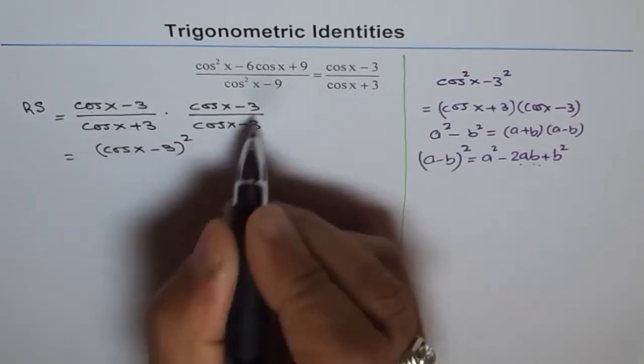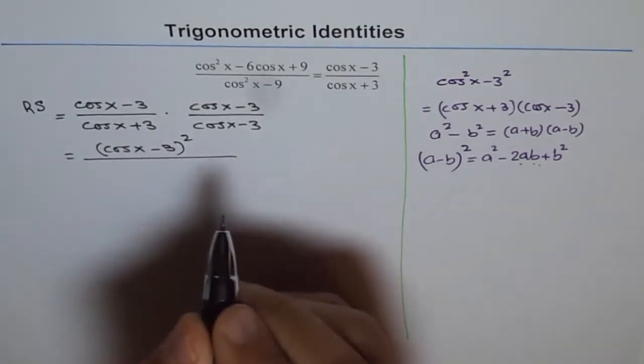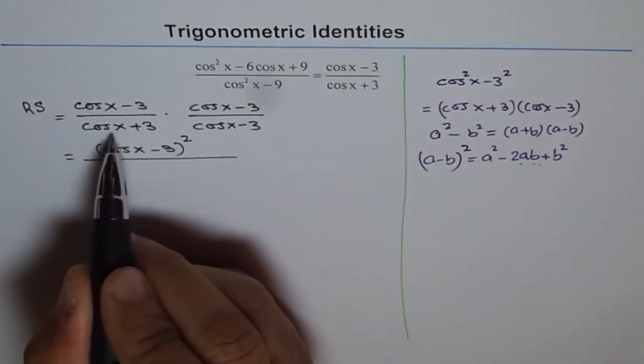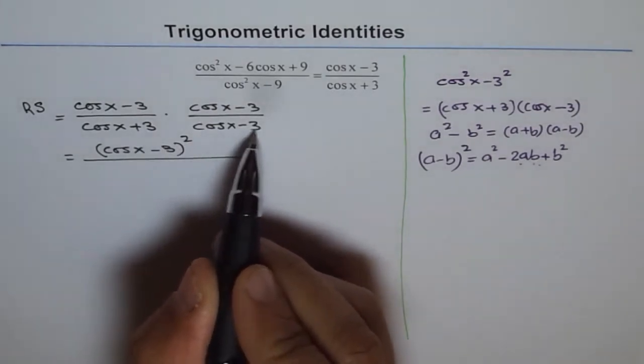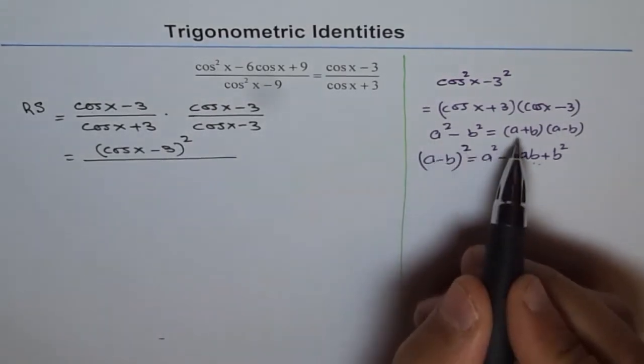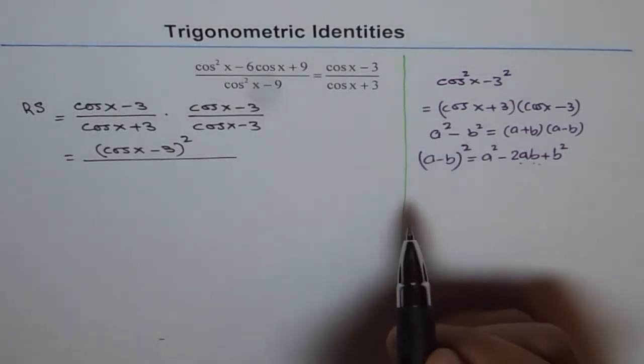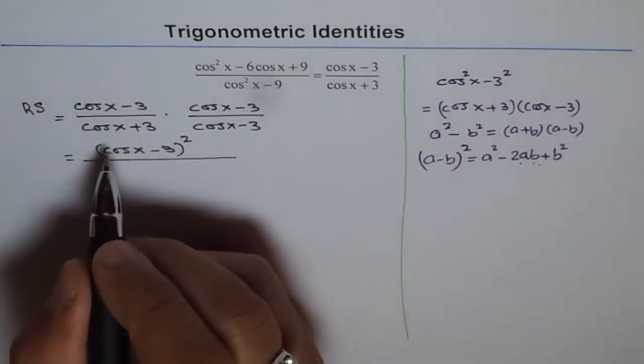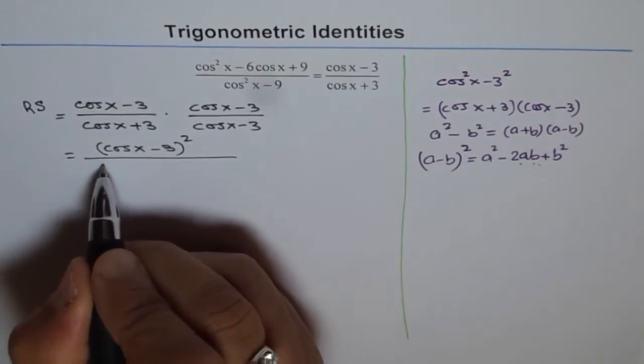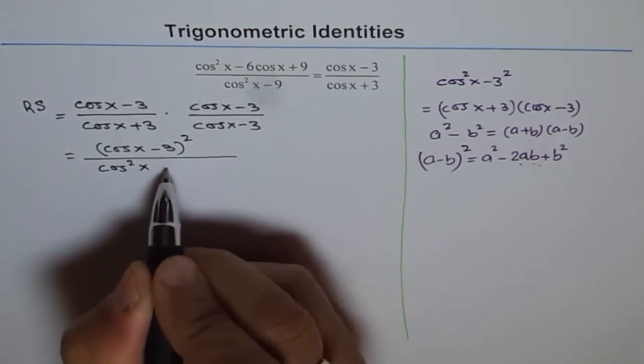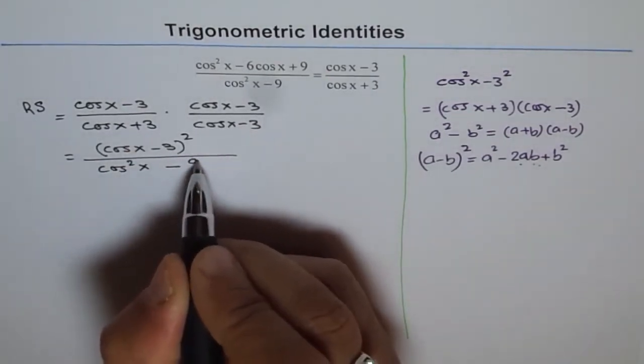Times cos x minus 3. So you can expand it otherwise also. And here we have cos x plus 3 times cos x minus 3, which is a plus b times a minus b gives me a square minus b square. So a square minus b square is cos square x minus 9.